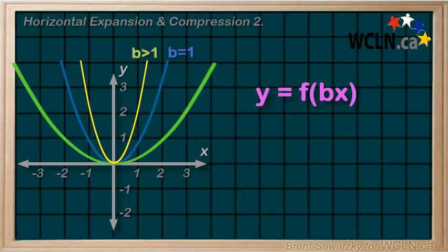If b is greater than 1, then we recognize it as a horizontal compression. If b is between 0 and 1, we recognize it as a horizontal expansion.